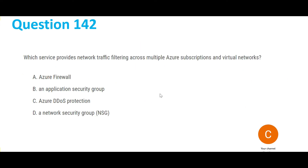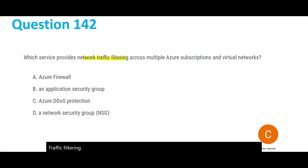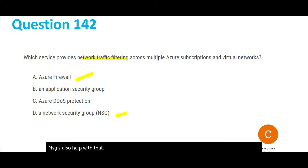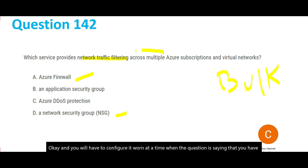The next question asks about network traffic filtering. Whenever we are talking about filtering, it should be a firewall. A firewall can do filtering in bulk, whereas NSG you have to configure one at a time. When the question states that you have to do it across multiple subscriptions and multiple virtual networks, that means we have to use Azure Firewall.